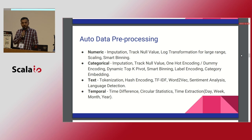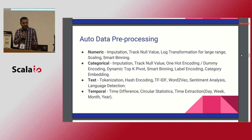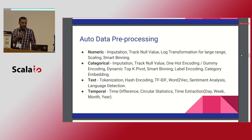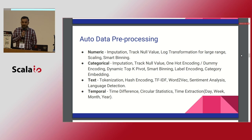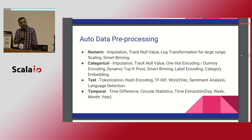When doing data processing: for numeric data, use imputation, track null values, log transformation for large-scale scaling, and smart binning. For categorical data: imputation, track null values, one-hot encoding, dummy encoding, dynamic top-K, smart binning, and category embedding. For NLP: tokenization, TF-IDF, word-to-vector, sentiment analysis, and language detection. Sometimes you go with RNN and fit a sequential model when working with deep learning.